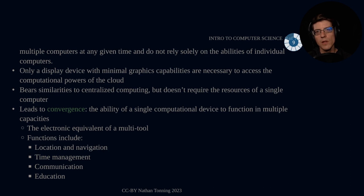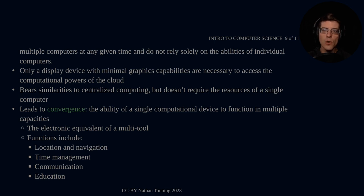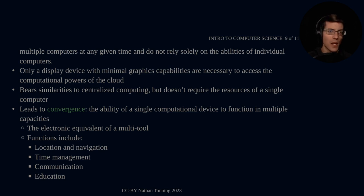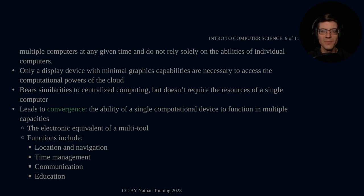The difference between cloud computing and centralized computing is that with centralized computing, you knew it was a single machine — the mainframe — and you were connected to the terminal. With cloud computing, you don't know exactly where the computation is occurring. You could put a tracer on the data as it pings between different computers, but they're very different beasts, so to speak.